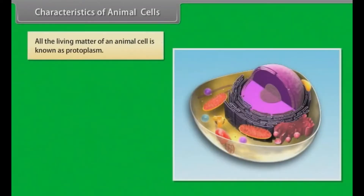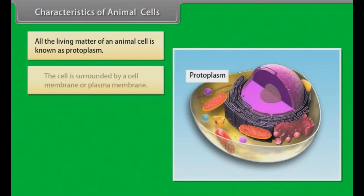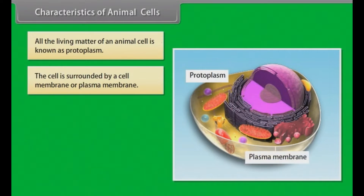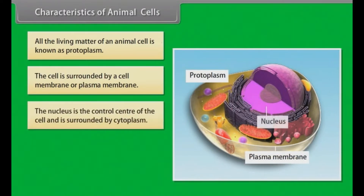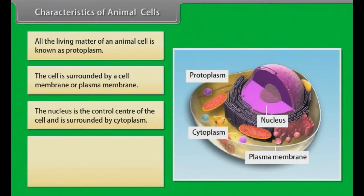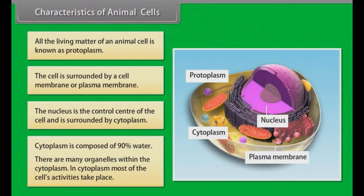All the living matter of an animal cell is known as protoplasm. The cell is surrounded by a cell membrane or plasma membrane. The nucleus is the control center of the cell and is surrounded by cytoplasm. Cytoplasm is composed of 90% water. There are many organelles within the cytoplasm, and most of the cell's activities take place in the cytoplasm.